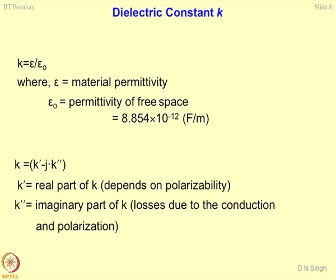Complex permittivity k is defined as k′ − j·k″. Here j·k″ is the imaginary part of k, and k′ is the real part which depends upon how easily the system can get polarized — this is known as the polarizability of the material. k″ represents the losses in charge due to conduction and polarization effects. It is important to measure both k′ and k″ parts of the material for its complete characterization.